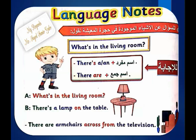Number four: there is a television between the armchairs. Between means بين in Arabic. When you want to ask about things in the living room, use: what's in the living room? You answer: there is a plus singular noun, or there are plus plural noun. For example: there is a lamp on the table; there are armchairs across from the television. Across from means the opposite side.